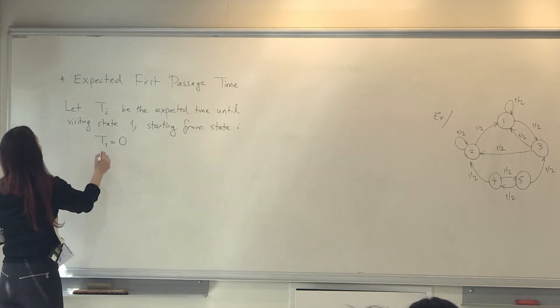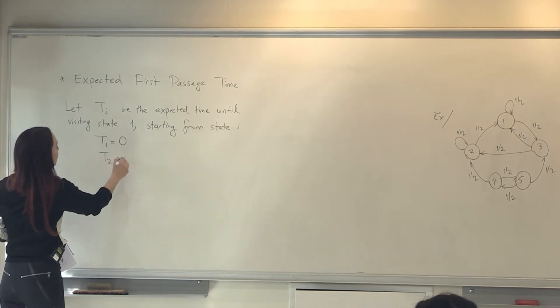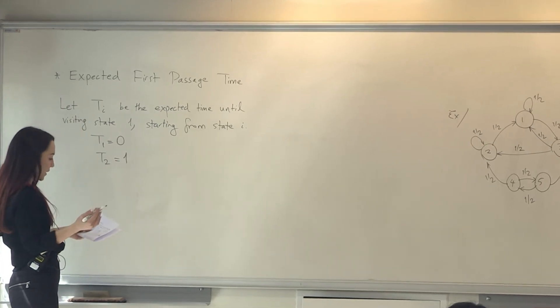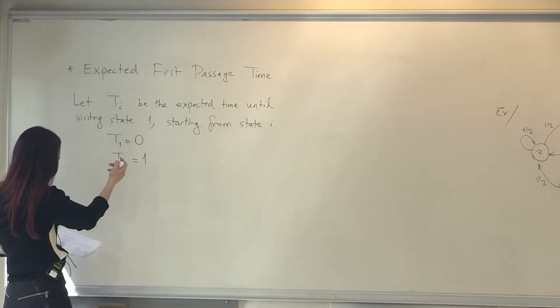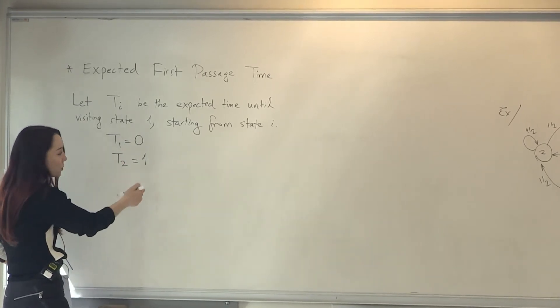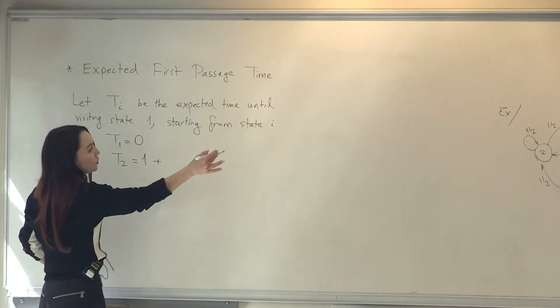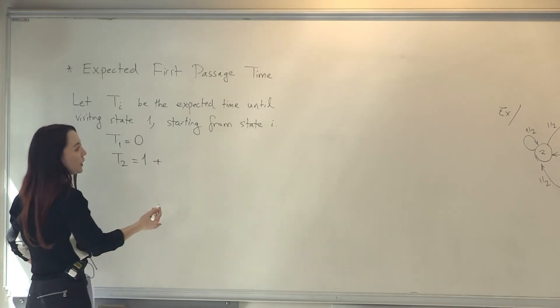But from any other state, we need to make one transition, right? At least, from state 2 for example, we need to make one transition first. And then depending on where we go, we will make further transitions.